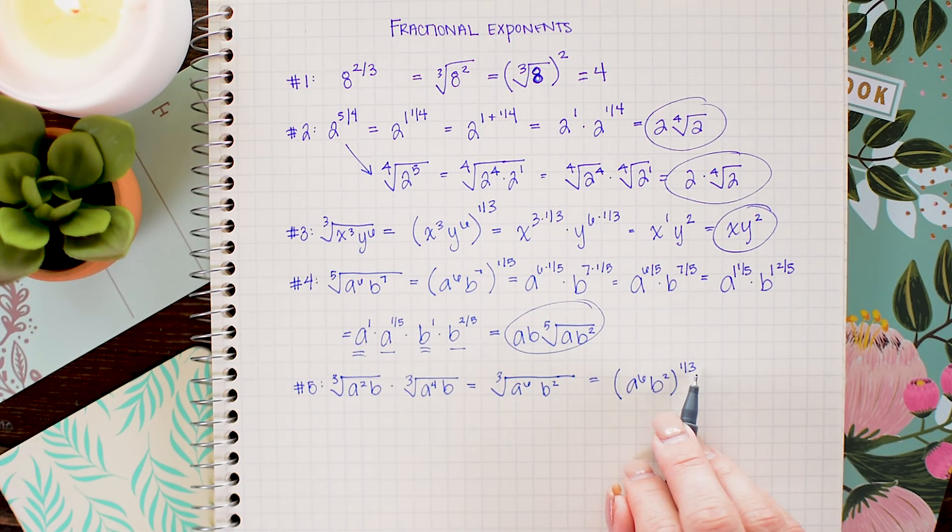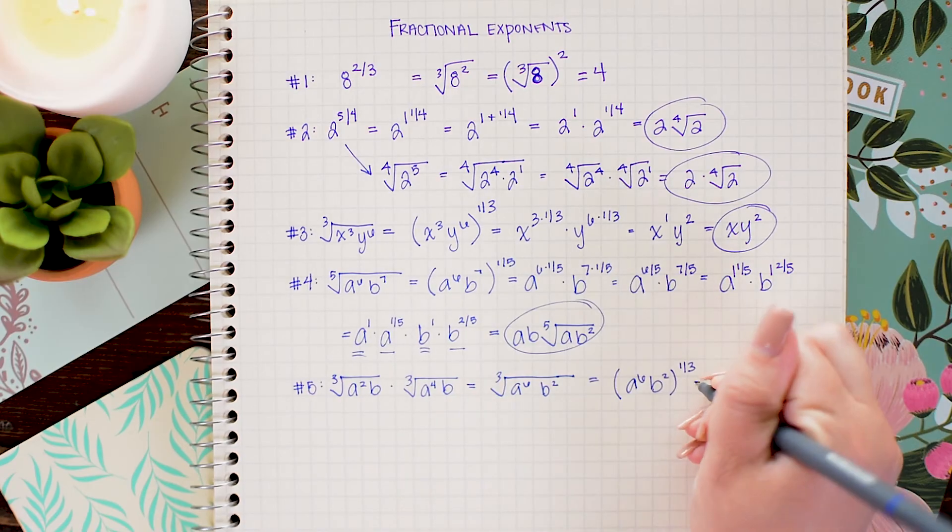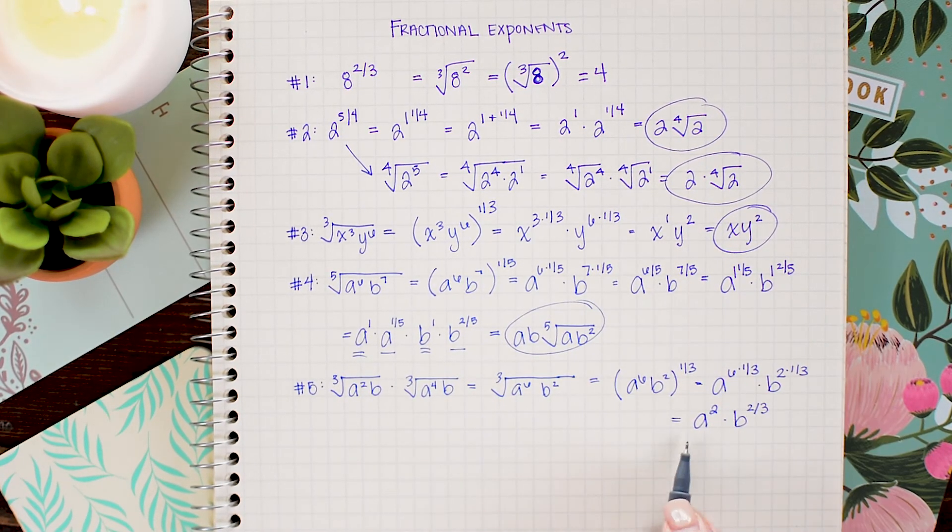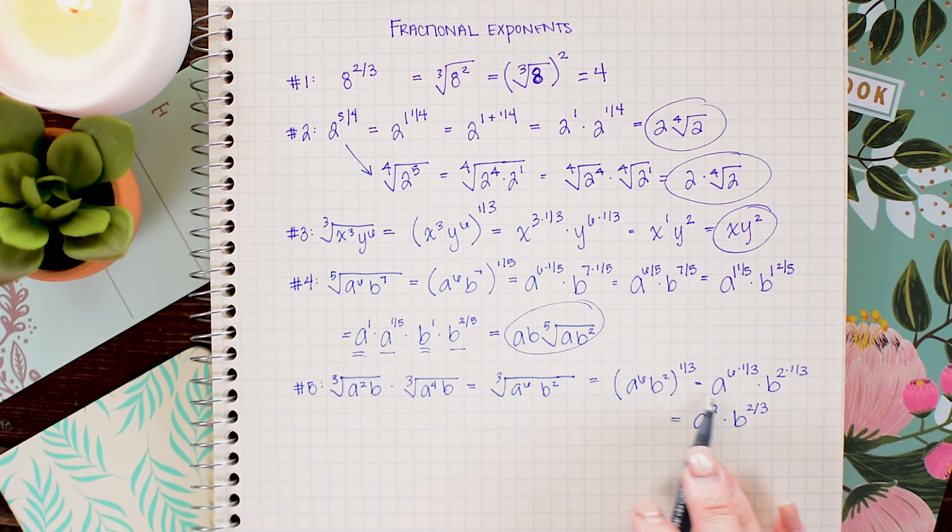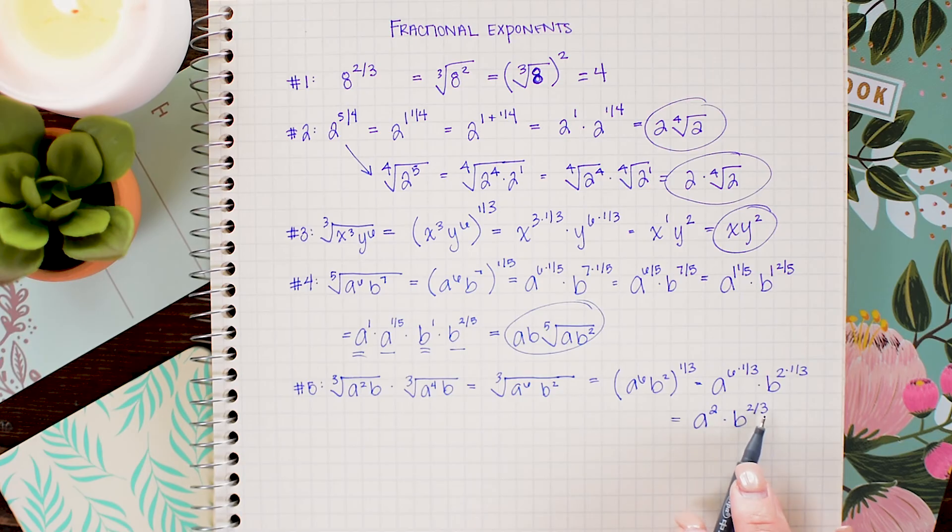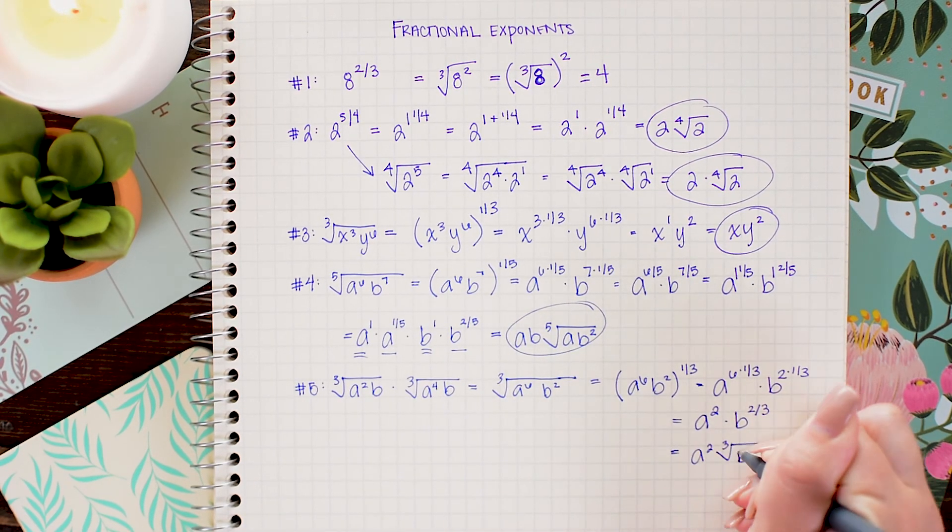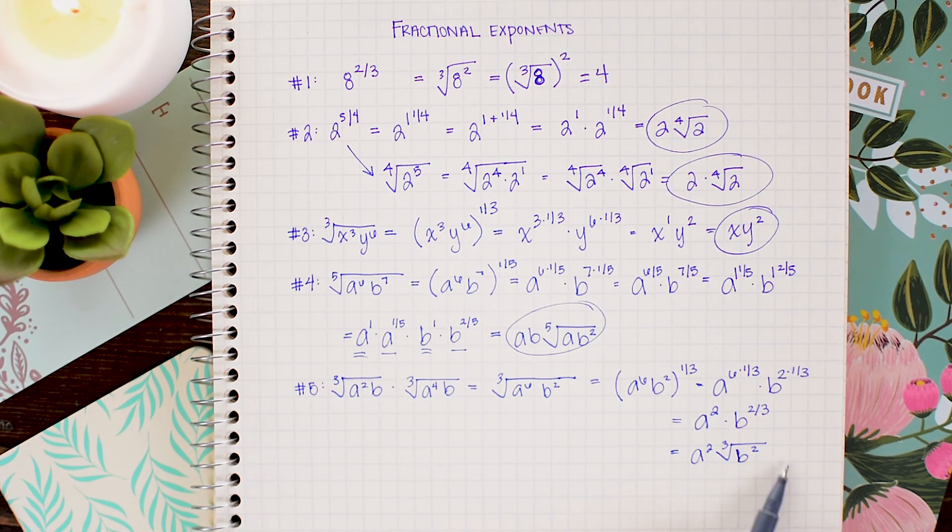Now let's go ahead and trade out this cube root for the 1 third power. Then we can go ahead and multiply the 1 third power through. When we do that we get a squared times b to the 2 thirds. So the a squared has now lost the radical since I've gotten rid of the fraction in the exponent. And the b can be rewritten back in a cube root since I have this divide by 3 in the exponent. And you just want to make sure not to forget to write that power of 2 back on the b when you transcribe it.